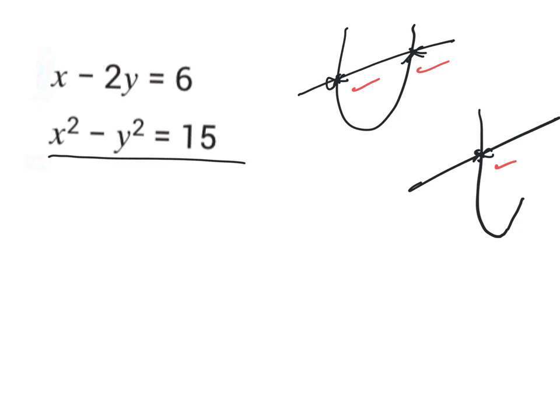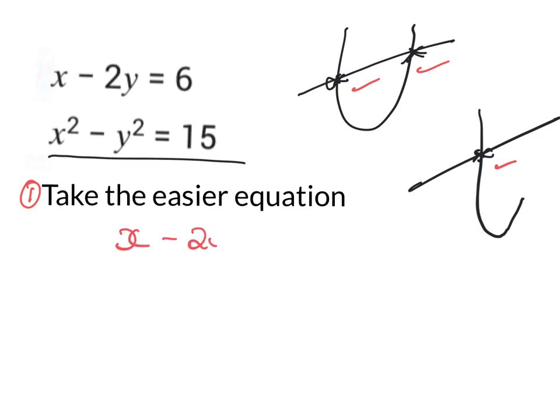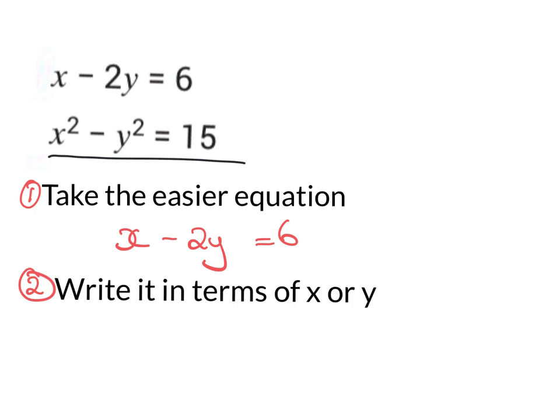Step one is always the same. Take the easier equation and in this case it is x minus 2y equals 6.